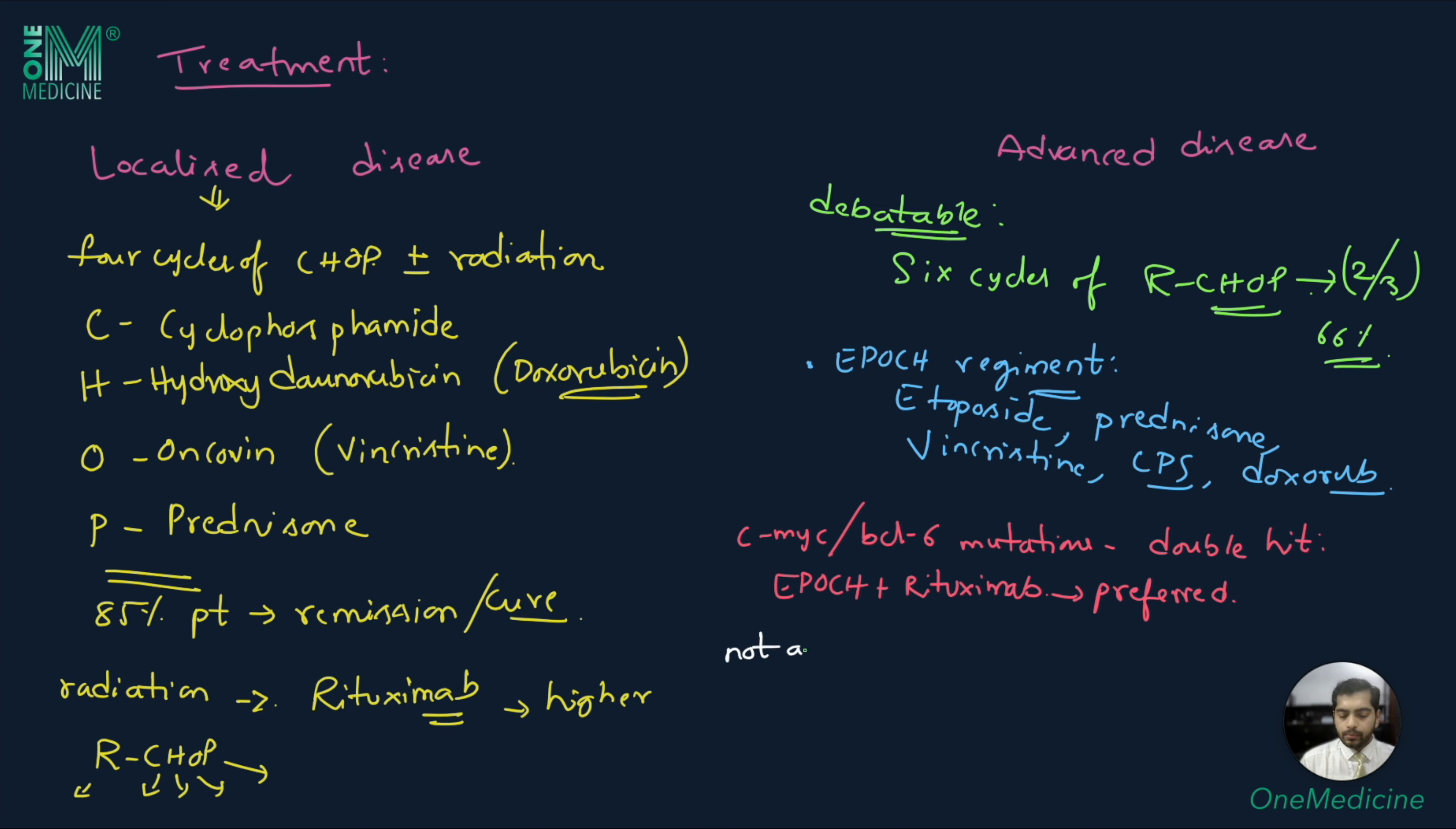Patients who do not achieve cure undergo high-dose therapy and also undergo autologous hematopoietic stem cell transplantation. One important complication, especially in bulky lymphomas, is tumor lysis syndrome. If tumor lysis syndrome is present, it is usually treated with hydration, allopurinol, rasburicase, and correction of electrolytes.